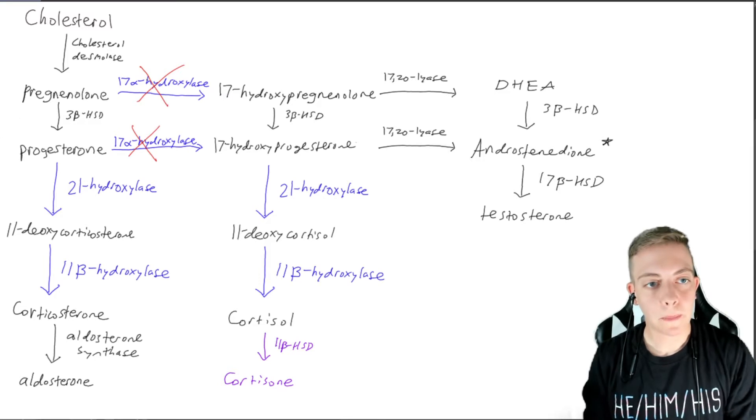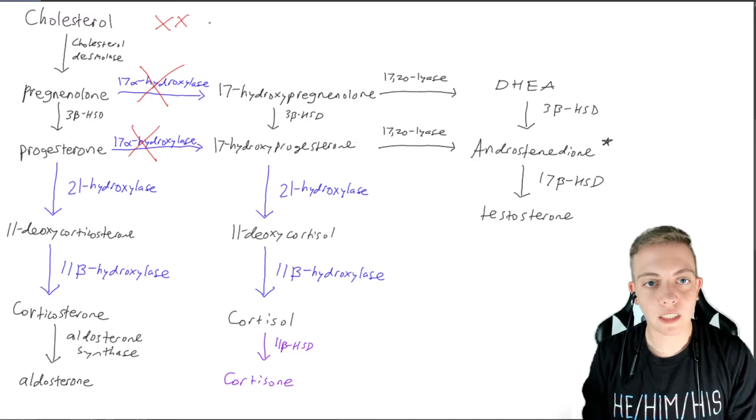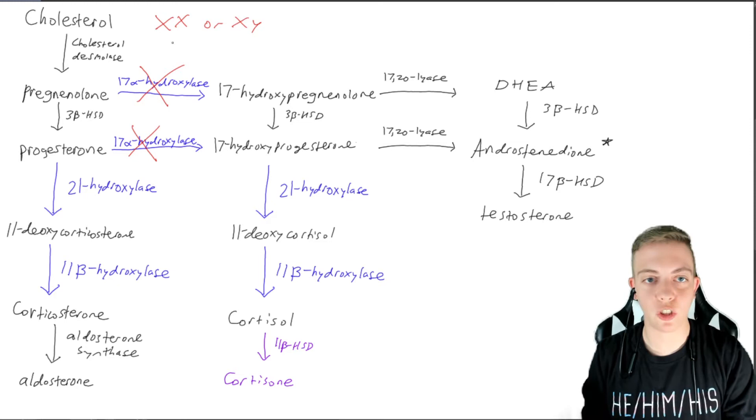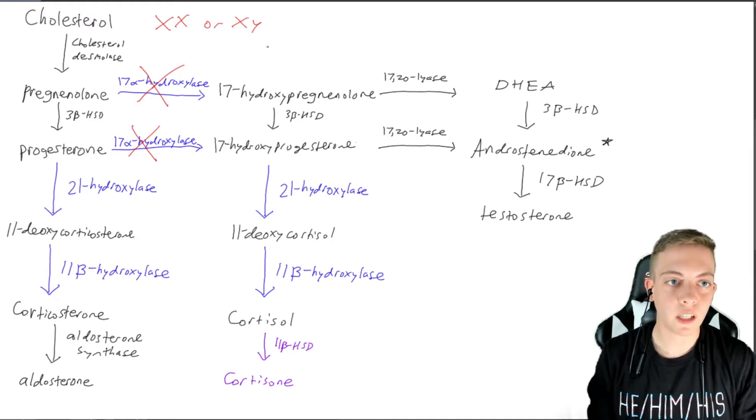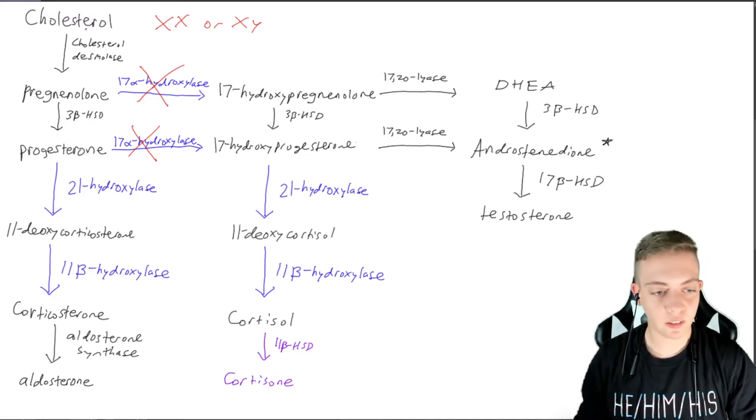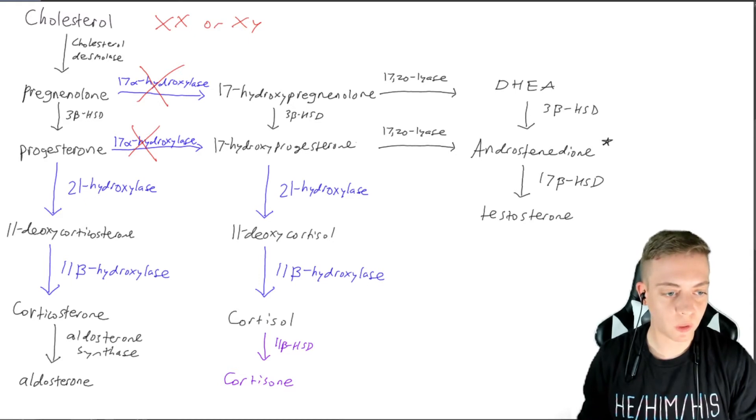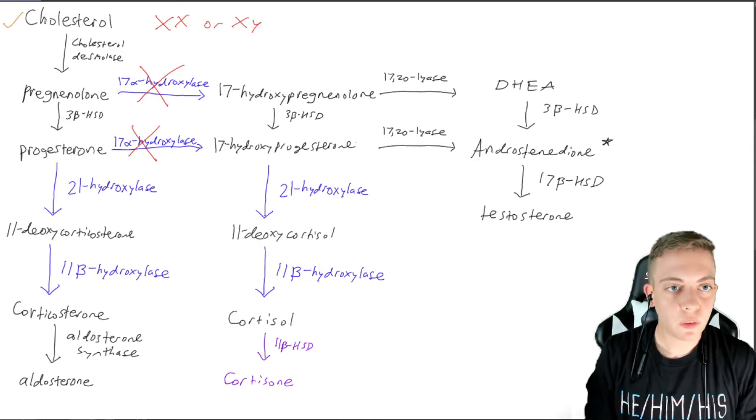We have cholesterol, which will become pregnenolone. And we're going to have this in both XX or XY, but we're not going to talk about the differences just yet, because the pathway is going to be the same for both. Cholesterol is going to enter and be converted by cholesterol desmolase to pregnenolone, same as we would always have.